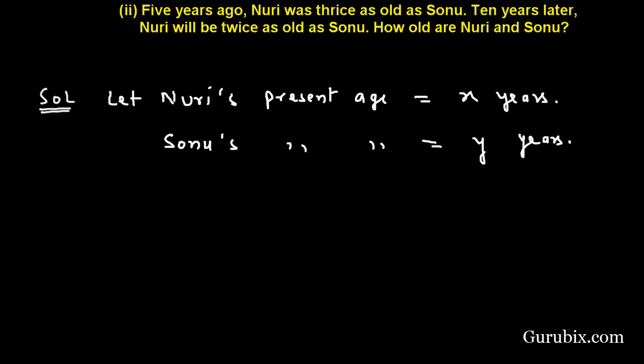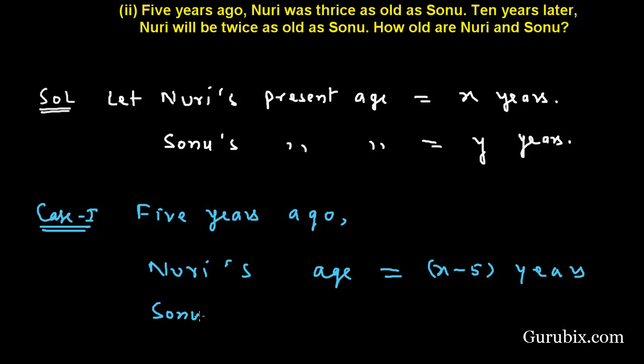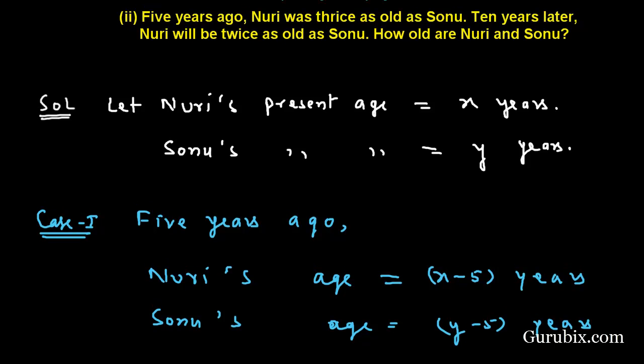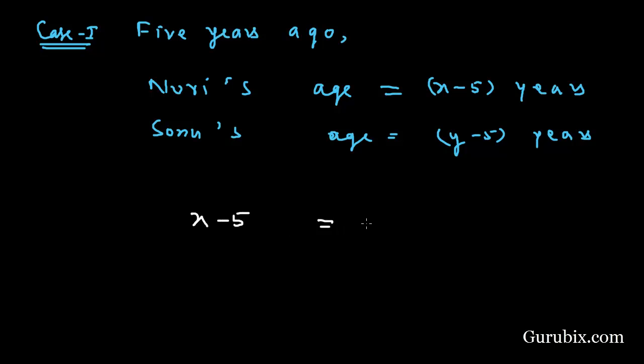In case 1, five years ago, Nuri's age was x minus 5 years. Sonu's age was y minus 5 years. And Nuri was thrice as old as Sonu. This means this is Nuri's age and this was Sonu's age.